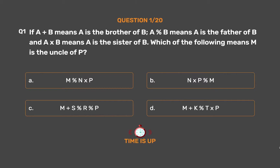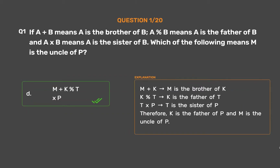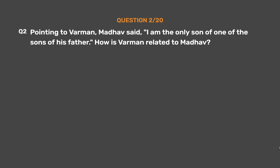The correct answer is Option D: M + K % T × P. M + K means M is the brother of K. K % T means K is the father of T. T × P means T is the sister of P. Therefore, K is the father of P and M is the uncle of P.